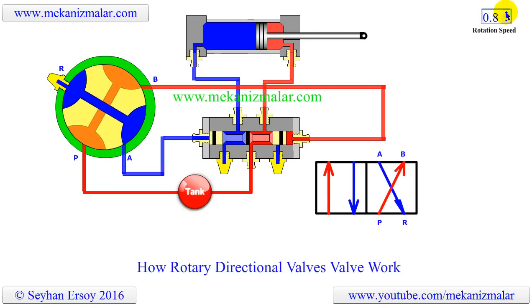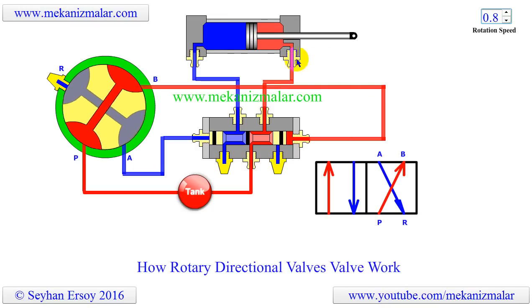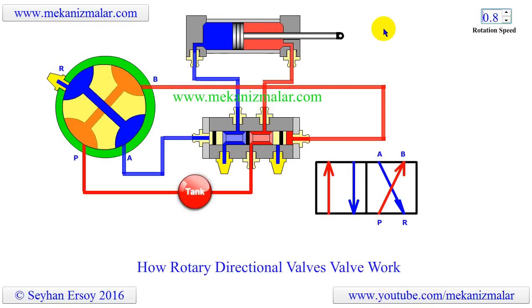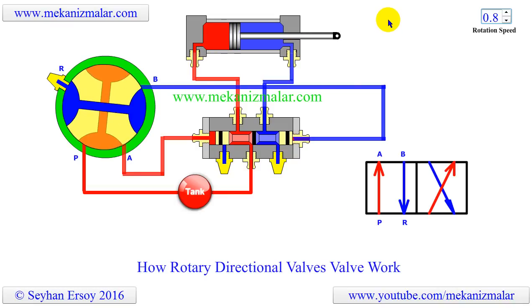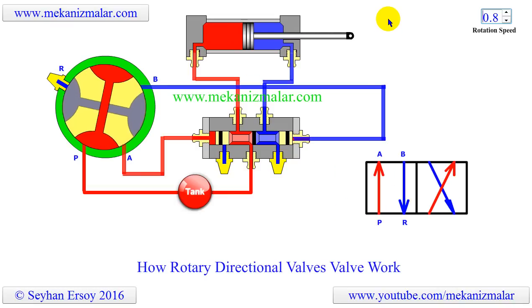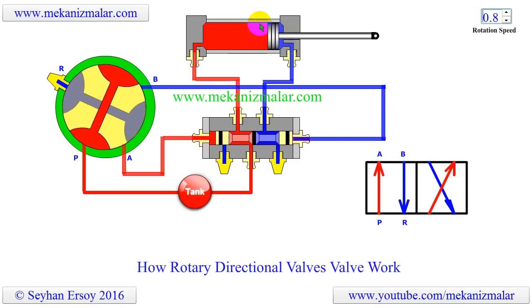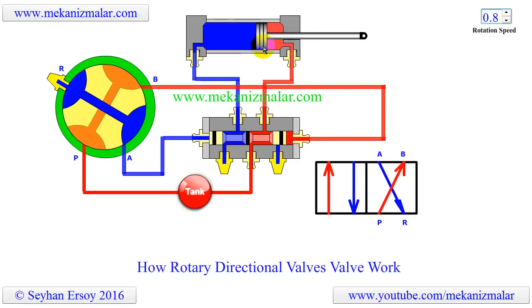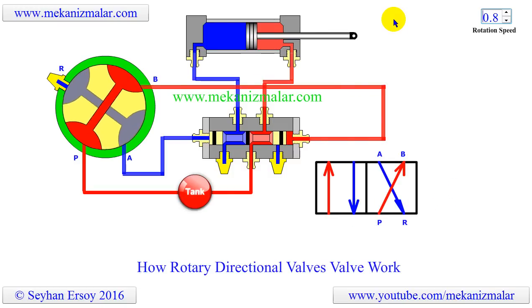However, after a certain rotation speed, whatever we do, the piston will not complete its full reciprocations. One has to choose the most appropriate cylinder size for a given reciprocation speed. The smaller the cylinder, the higher will be its reciprocation speed.